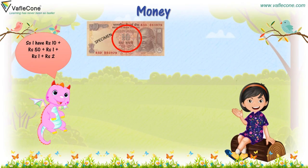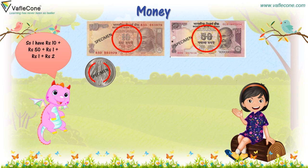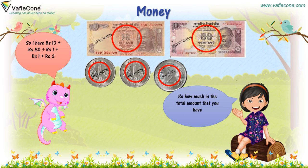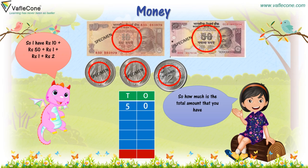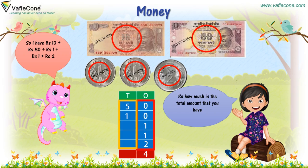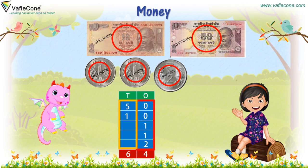So, I have rupees 10 plus rupees 50 plus rupees 1 plus rupees 1 plus rupees 2. So, how much is the total amount that you have? We start adding from the biggest number: 50, then 10, after that 1, 1, and 2. Adding first in the 1's place: 1 and 1 and 2 is equal to 4. And at the 10's place: 5 plus 1 plus 1 is equal to 6. So I have rupees 64. Yes, now you are right.